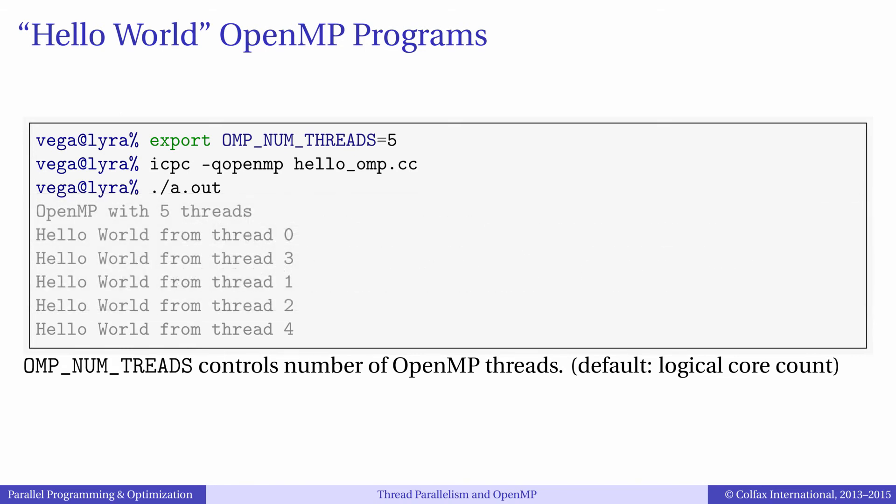As we can see, our Hello World program with OpenMP works and prints Hello World from multiple threads. The order of execution is not fixed, so the thread numbers are not in order.